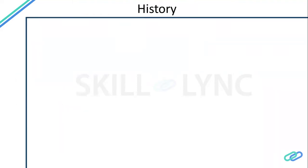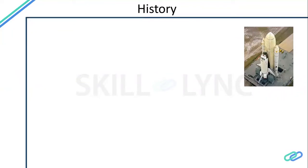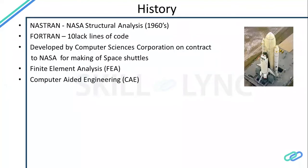Coming to the history — it started at NASA. The first space shuttle was launched by NASA in the 1960s. NASTRAN stands for NASA Structural Analysis: NASA, ST for structural, AN for analysis. NASA was developing the space shuttle and planned to develop software to solve problems in the development process. They looked at available tools but found them insufficient.